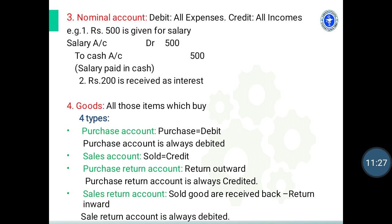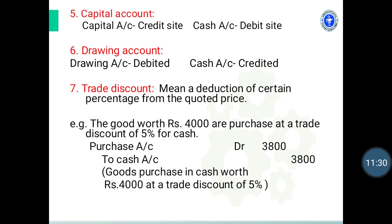In case of capital account, the owner of the business is always considered separate from the business. The capital account is on the credit side and the cash account is on the debit side. For drawing account, when a businessman withdraws money from his business for personal use, the drawing account is debited and the cash account is credited.